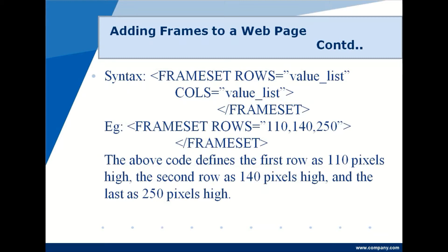This is the syntax of the frameset tag. Either rows or cols can be used at a time — to divide horizontally, rows is used, and to divide vertically, cols is used.